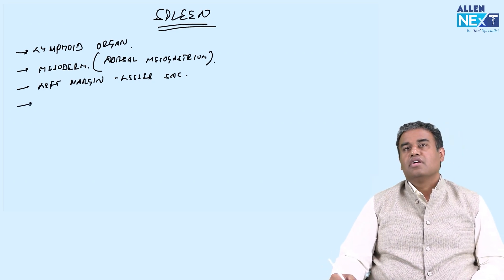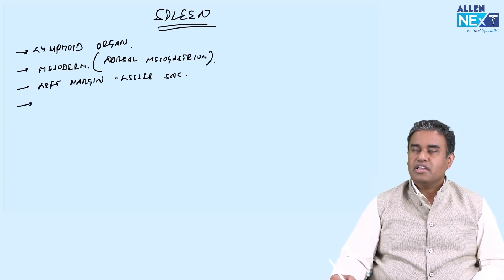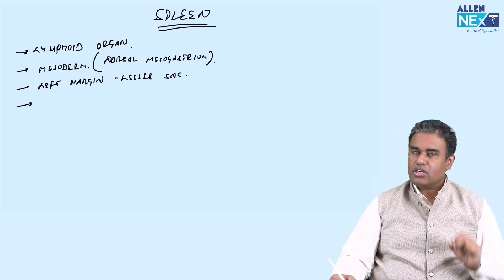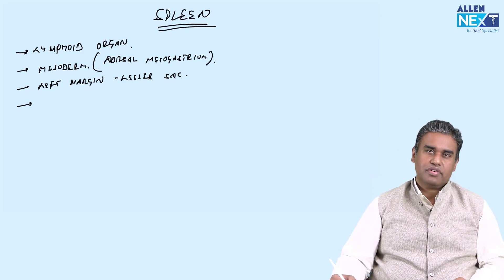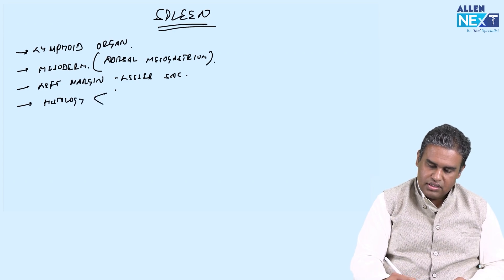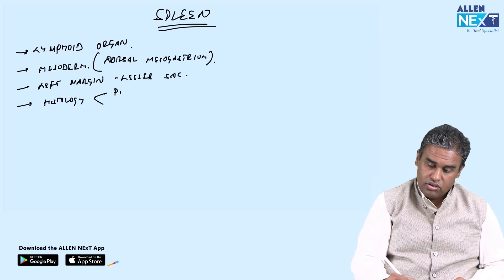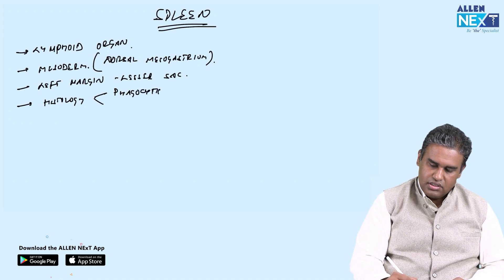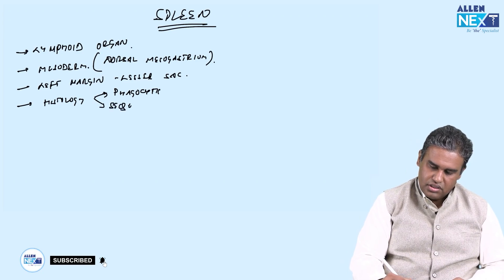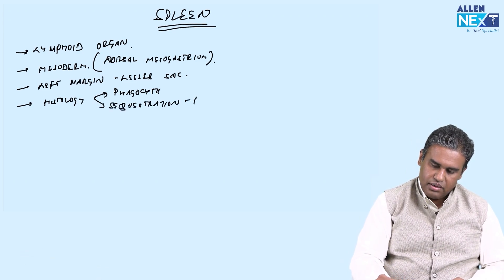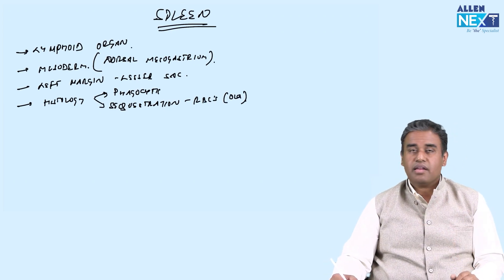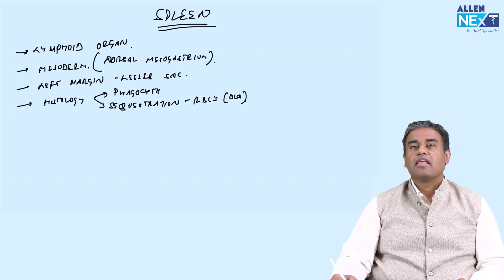What is the role of spleen? Spleen, degeneration of old RBCs and being a lymphoid organ for the production of lymphocytes. There are two roles of it. Remember the histology is important and it has two roles. One is the phagocytic role because it is a lymphoid organ. Second is sequestration of old and dematured RBCs. It is seen in the red pulp and the white pulp when you see the spleen.